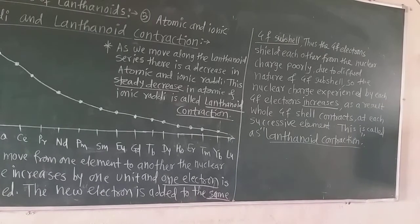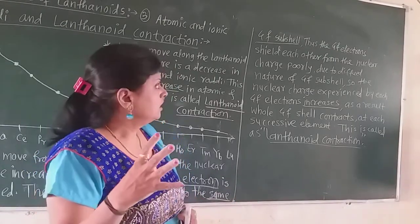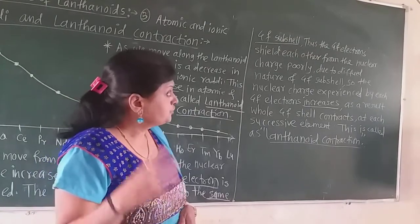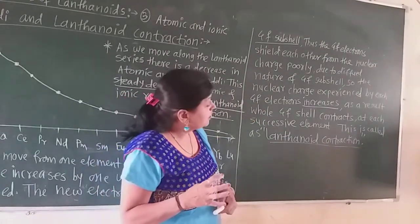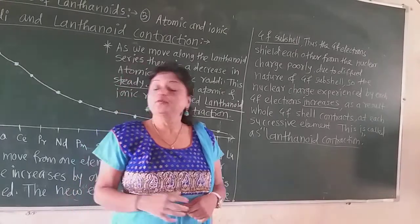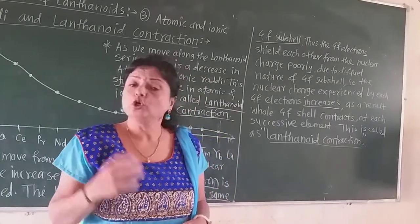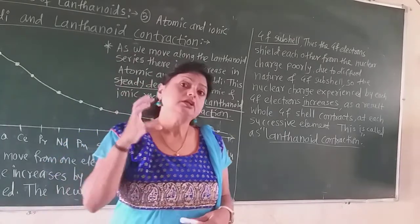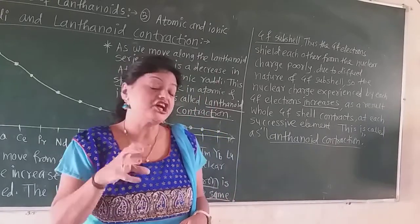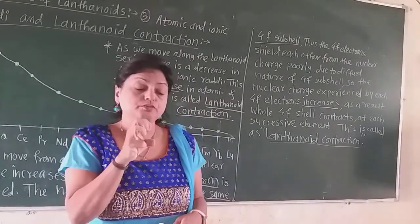Because the electrons are added into the same f-subshell but the nuclear charge increases, the shielding remains poor. The f-electrons shield each other from the nuclear charge very poorly due to the diffuse nature of the f-orbital. Unlike the spherical s-orbital, the f-orbital has lobes, and due to this diffuse nature, the electrons in the f-orbital are shielded very poorly from the nuclear charge.